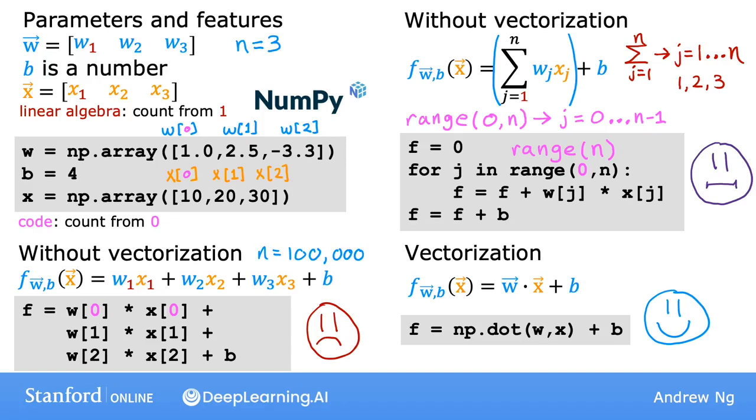But while this saves a lot on the typing, it's still not that computationally efficient because it still doesn't use vectorization. So to recap, vectorization makes your code shorter, hopefully easier to write and easier for you or others to read, and it also makes it run much faster.